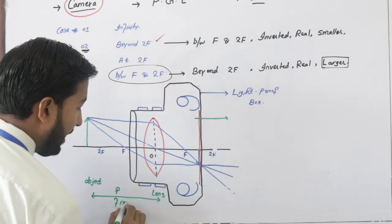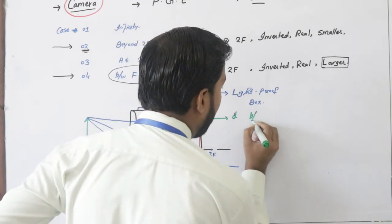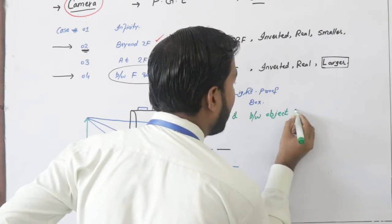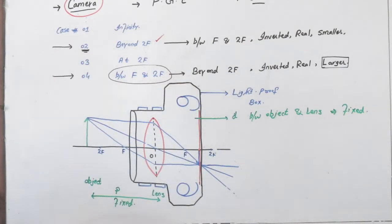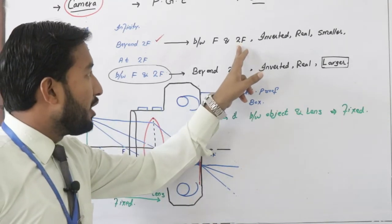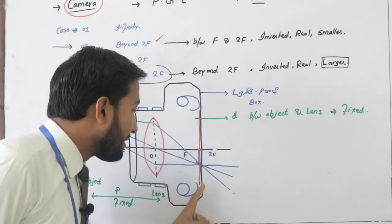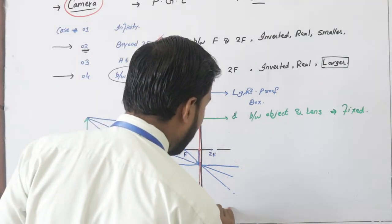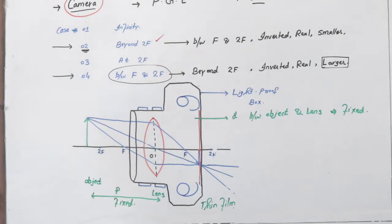Camera میں distance between object and lens ہمیشہ fix ہوتی ہے — یہ vary نہیں ہو سکتی۔ MCQ میں fix پر tick کریں۔ In this case, object is placed beyond 2F, here image is formed between F and 2F on a screen or thin film — inverted، real اور smaller۔